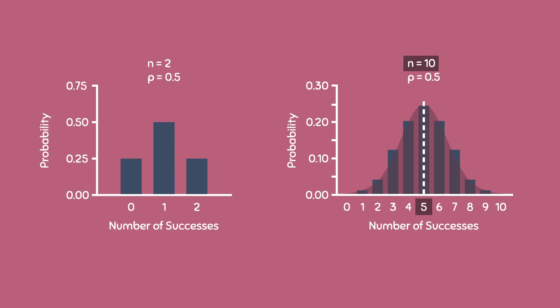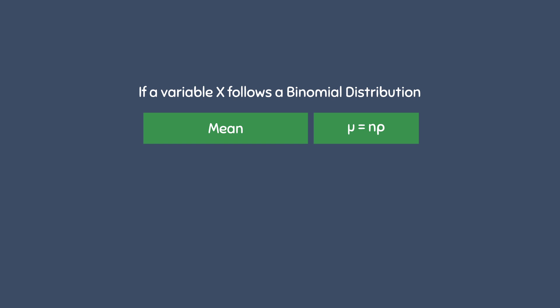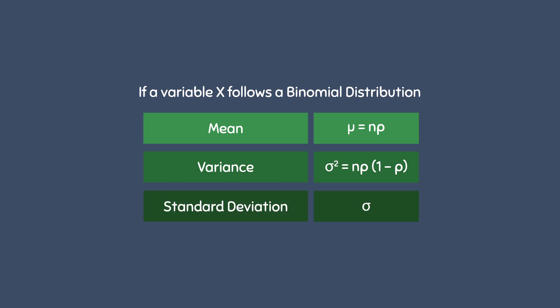We can actually calculate the parameters of a binomial distribution. If a variable x follows a binomial distribution, the mean mu is equal to n times p. The variance is equal to np times 1-p. And the standard deviation sigma is equal to the square root of np times 1-p.